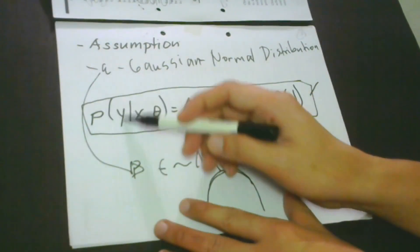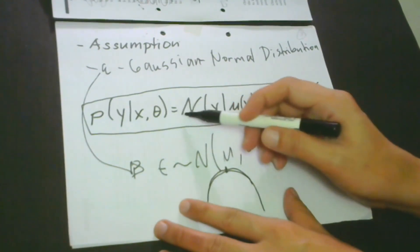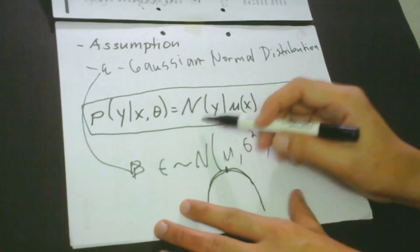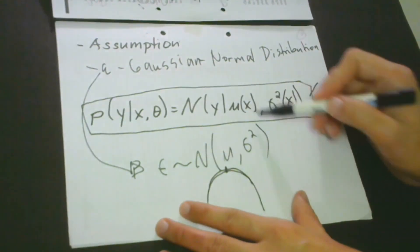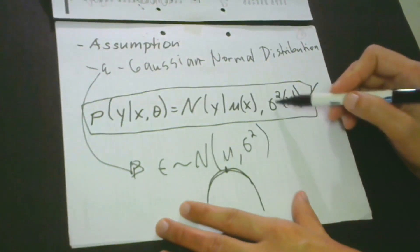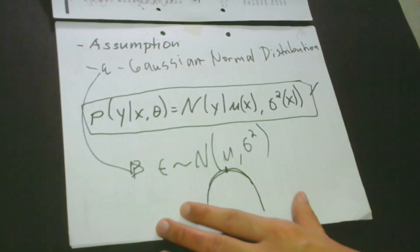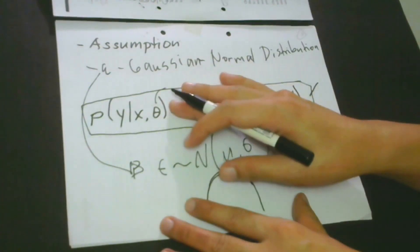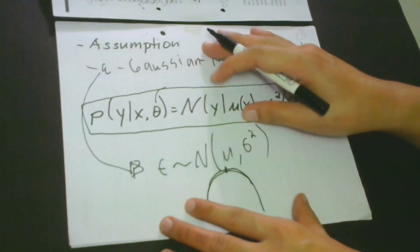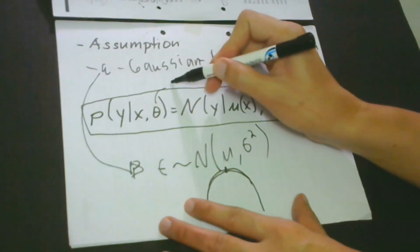So we have p(y|x,θ) = N which is a normal distribution. We have y given that mu times x with parameter variance times x. So maybe you would like to ask me, what does the theta here represent?